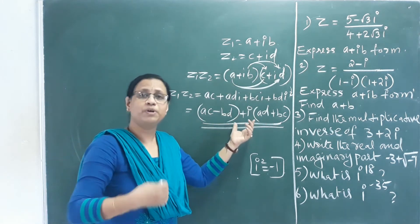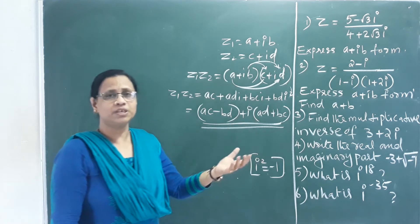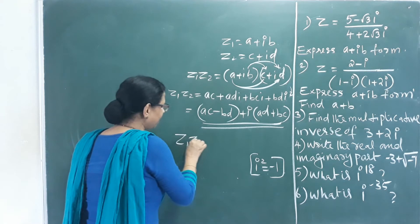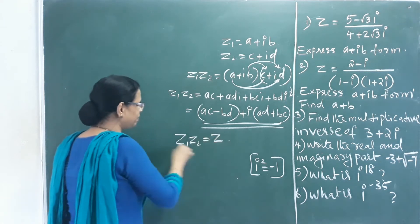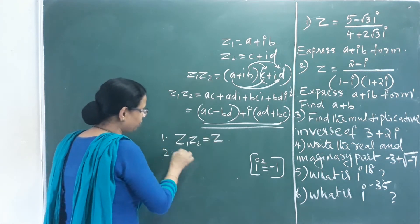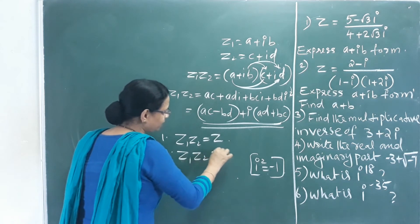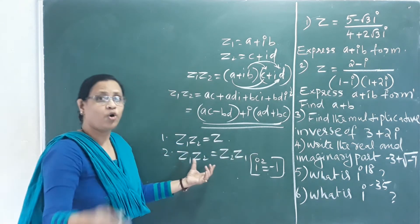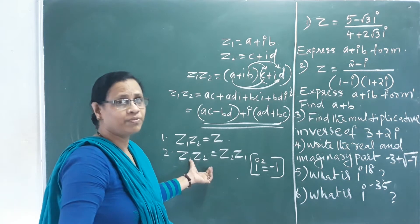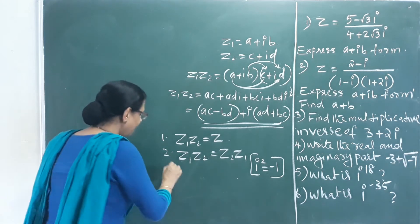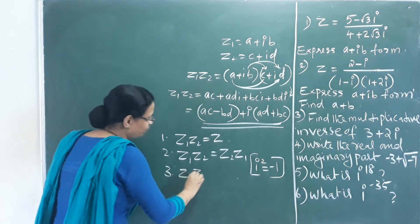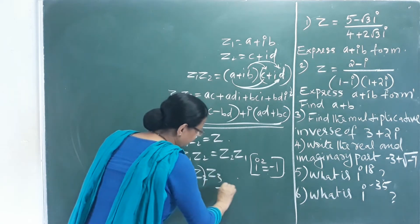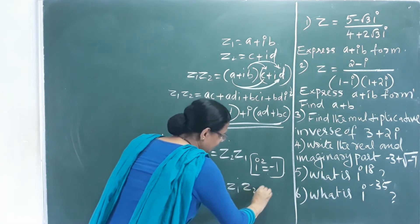Multiplication has the following properties: closure property — multiplying two complex numbers gives a third complex number; commutative property — Z₁ × Z₂ = Z₂ × Z₁; associative property — Z₁, Z₂, Z₃ multiplied in any order gives the same result.